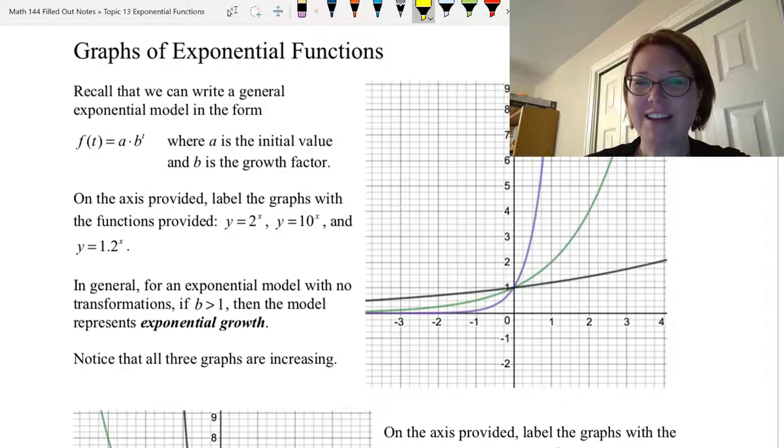We have a set of axes that has three graphs on it: y equals 2 to the x, y equals 10 to the x, and y equals 1.2 to the x. Let's explore these three graphs in Desmos to figure out which is which on the graph provided.